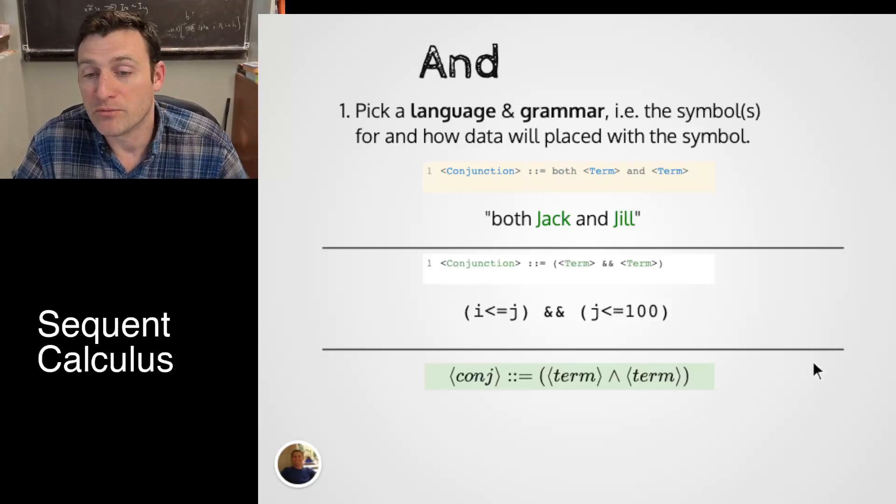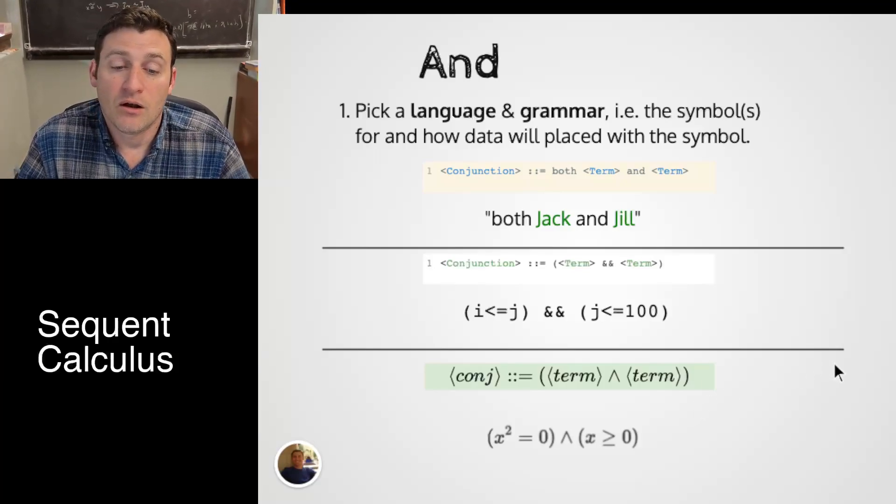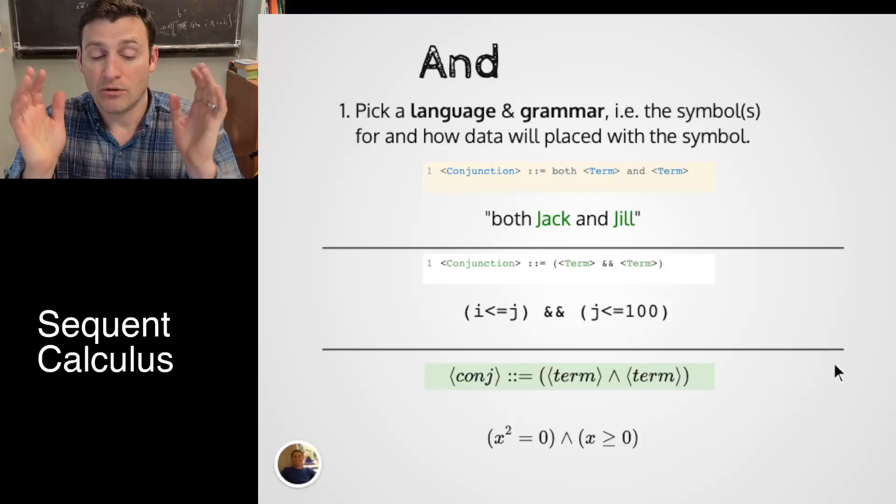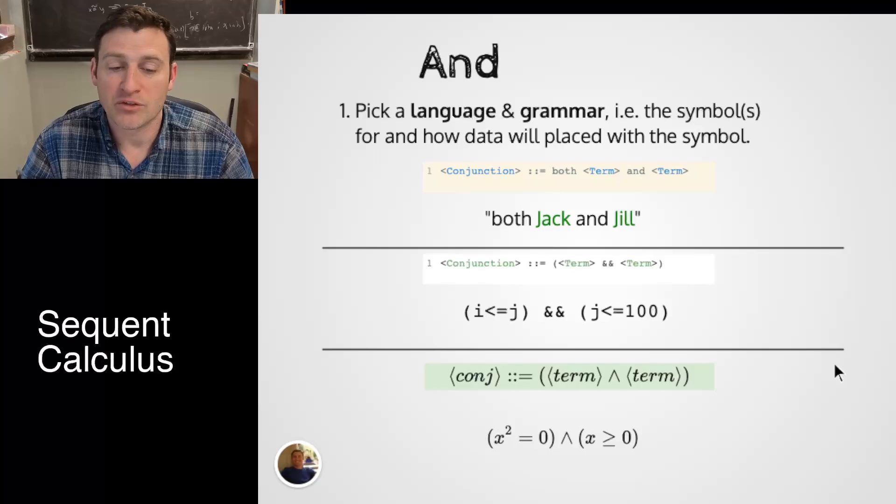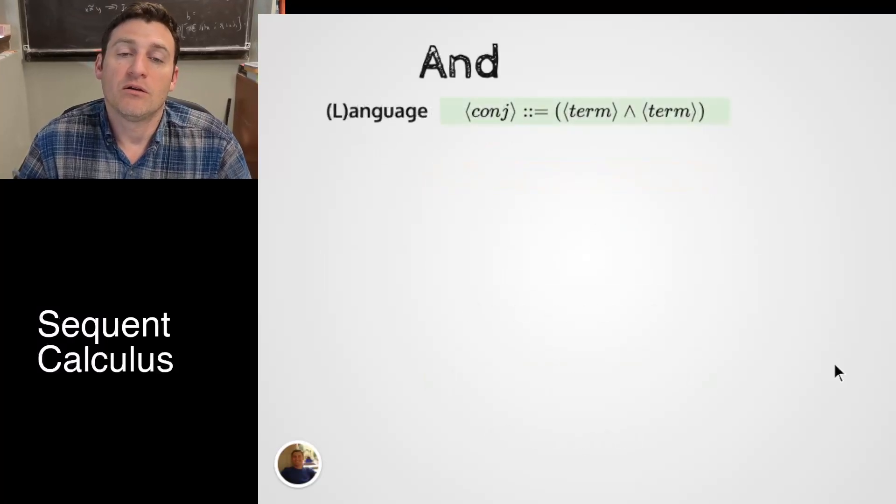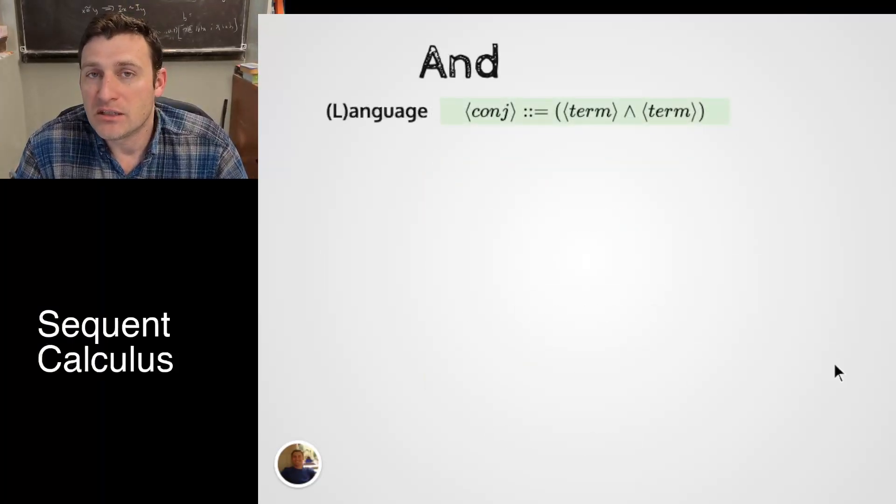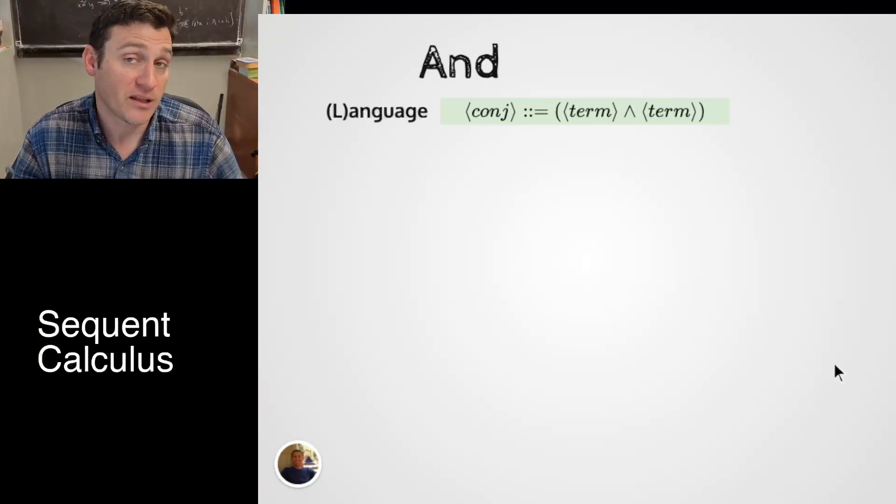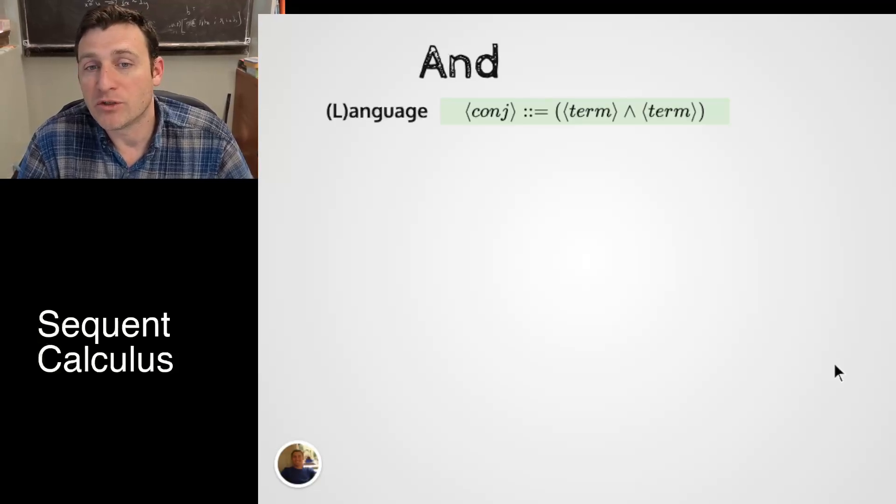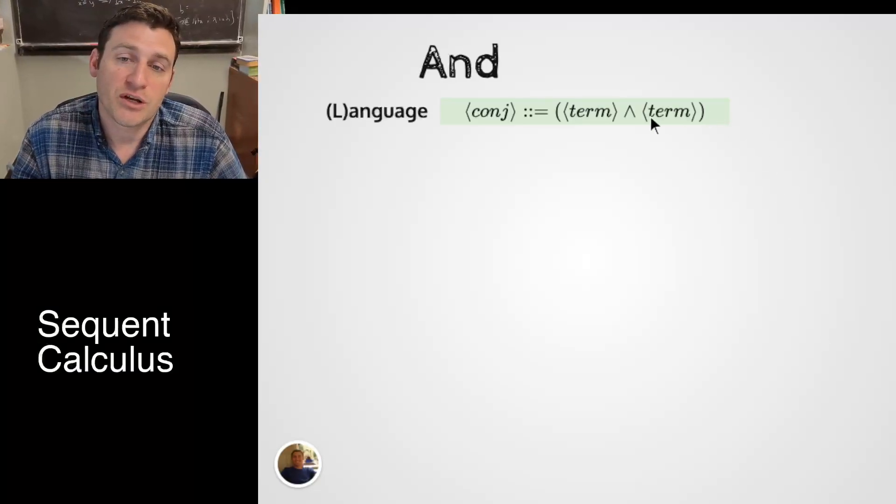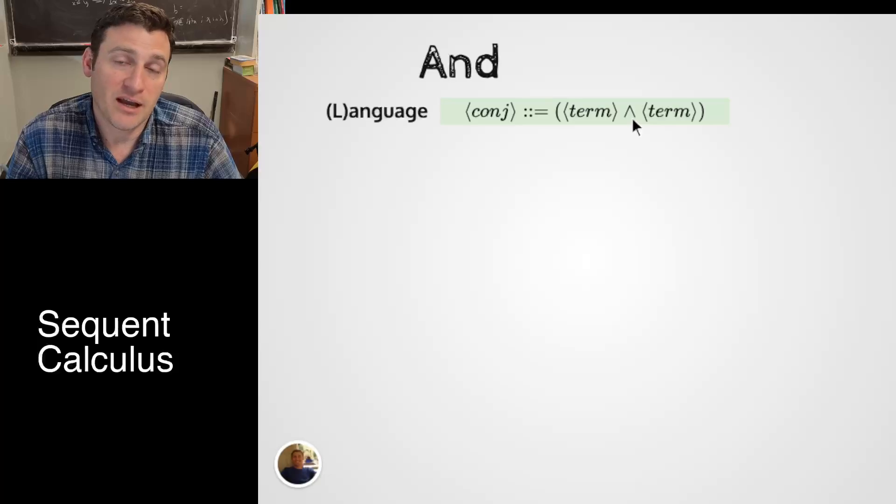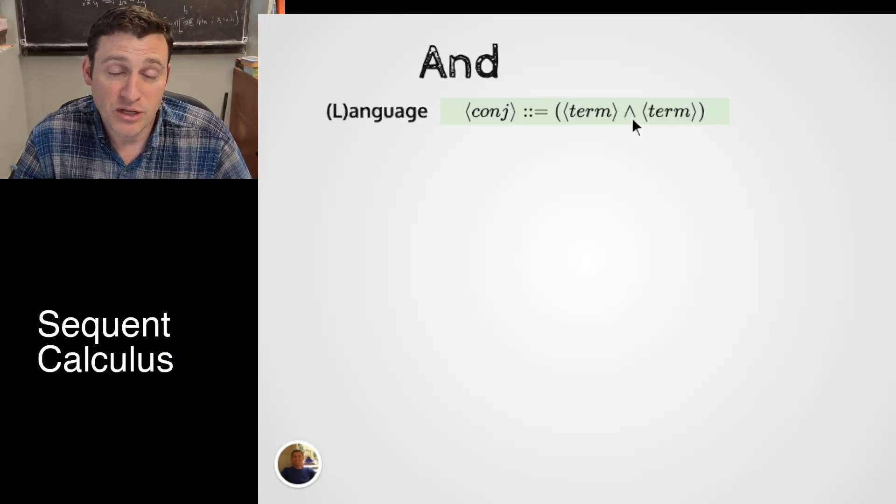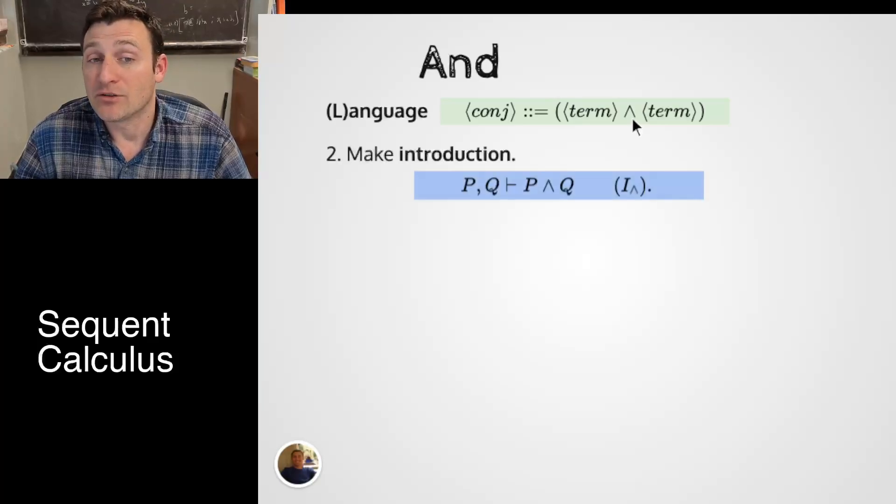Here I'm being careful to include parentheses so that as I grow to more and more ands, I can keep track of the order in which I glued them together. Here's an example of using the conjunction symbol. I can say x squared equals zero, the quantity, and x is greater than or equal to zero. Resist the need to figure out if something is true right now. Right now we're simply saying, what is the syntax of writing these symbols together? So we've established a language in which we can write the symbol and.